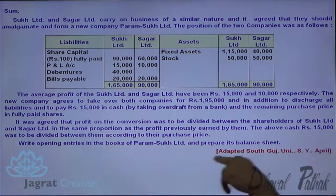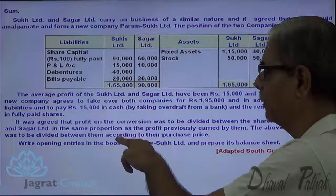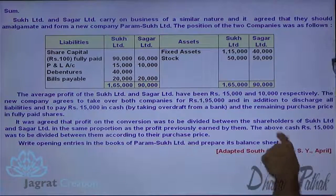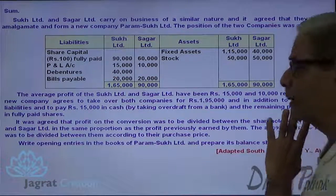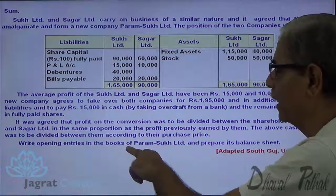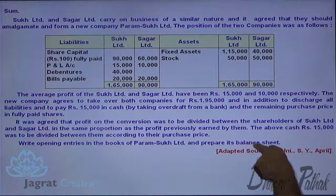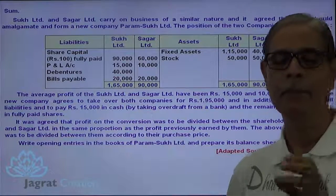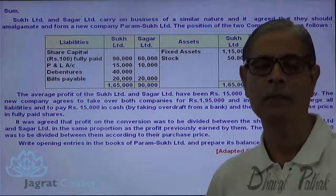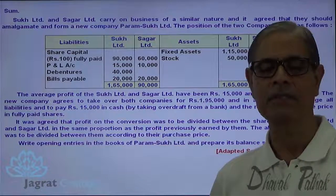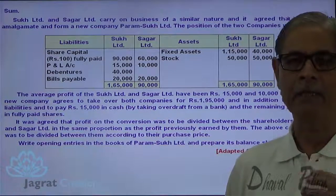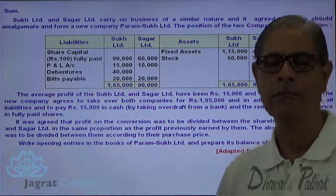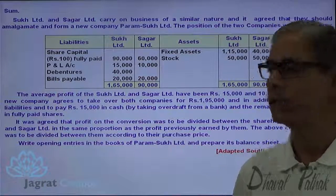The cash payment of Rs. 15,000 is to be divided between the two companies according to their purchase price. We are required to find out the payment on the basis of information given. Though this sum appears simple, the important point is that a combined purchase consideration is given.